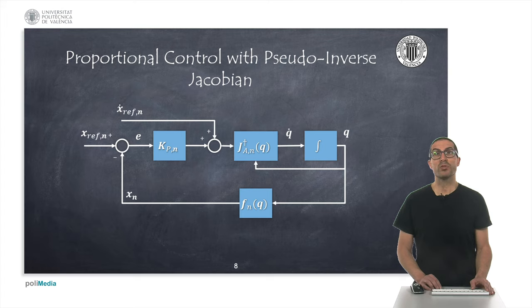The structure of the proportional controller with the pseudo-inverse of the Jacobian is identical to the previous case, so we don't discuss this further.